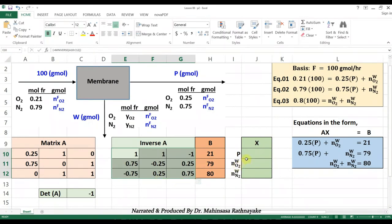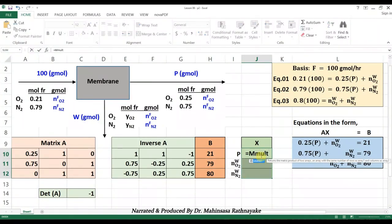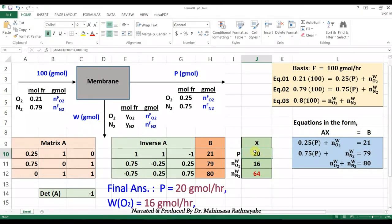For the final solution, we need to multiply the inverse matrix A and matrix B. The Excel function for matrix multiplication is MMULT and we mark the two matrices in array form separated by a comma. Then again press ctrl plus shift plus enter. Now we can see the final answer for capital P, that is the mole flow of product gas as 20 mole per hour. Individual mole flow of oxygen in the waste stream is 16 gram mole per hour, and the mole flow of nitrogen is 64 gram mole per hour.